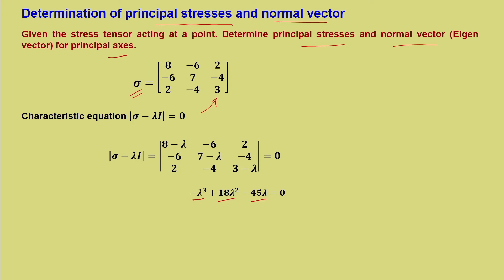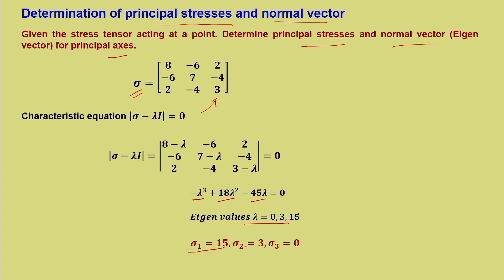I strongly suggest you go through and do it by yourself. Solving this equation, you will get the eigenvalues lambda equal to 0, 3, and 15. These eigenvalues are nothing but the principal stresses, and you can arrange them in diagonal matrix form: sigma 1 equal to 15, sigma 2 equal to 3, and sigma 3 equal to 0.